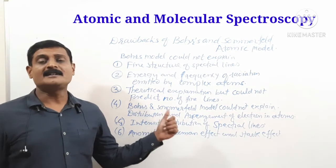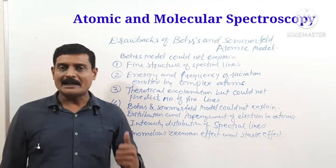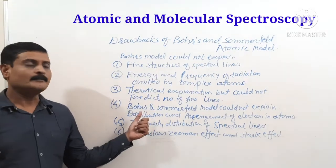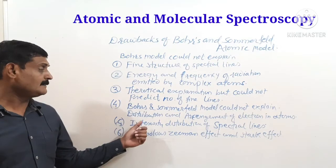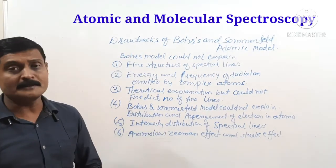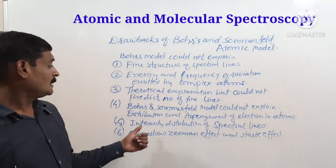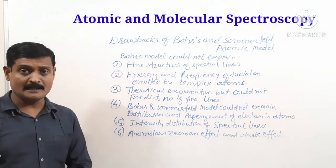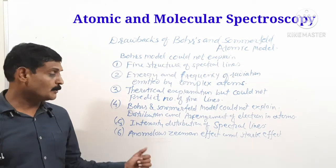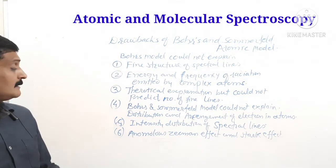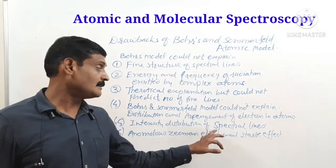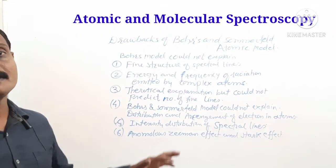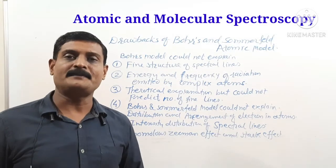Furthermore, Bohr's and Sommerfield models could not explain the distribution and arrangement of electrons in atoms, nor could they explain the intensity distribution of spectral lines. They also could not explain the anomalous Zeeman effect and the Stark effect. These are the major drawbacks of Bohr's and Sommerfield models.